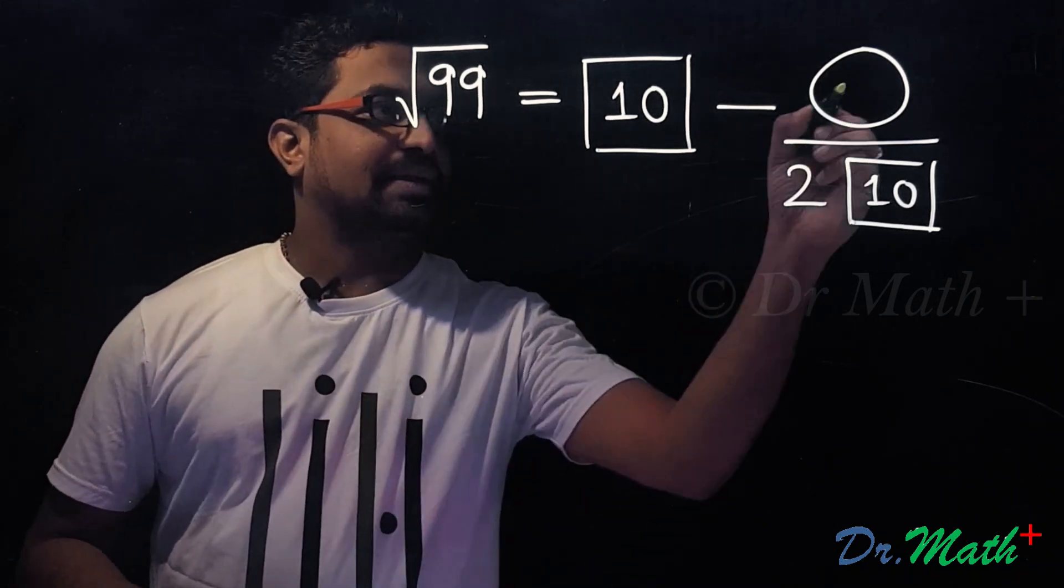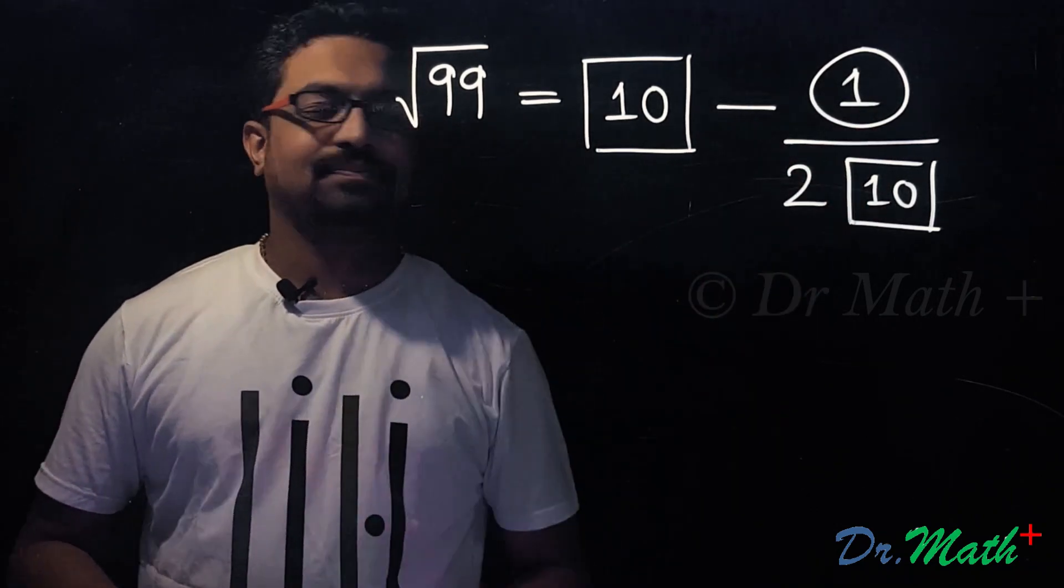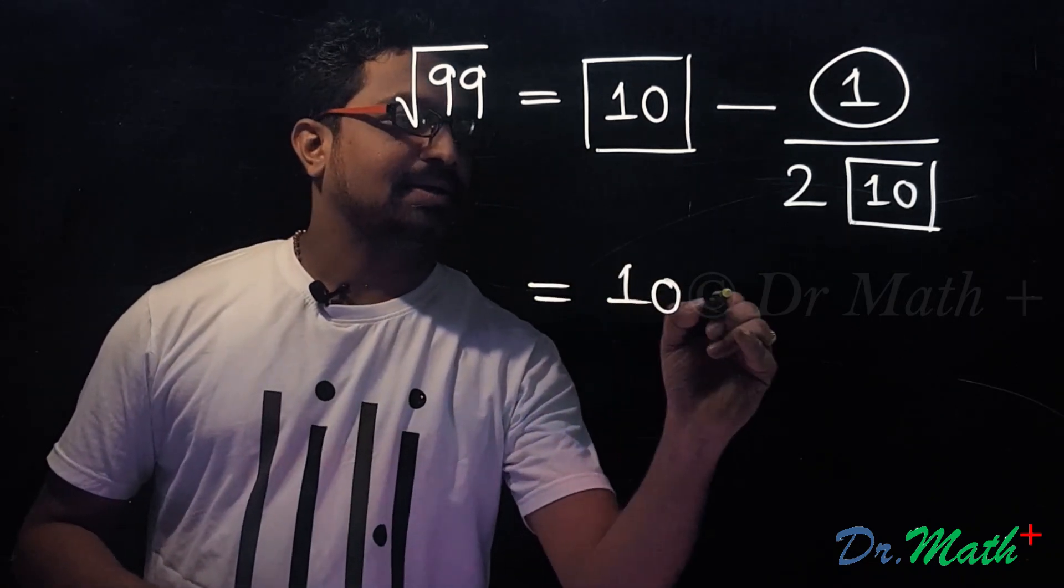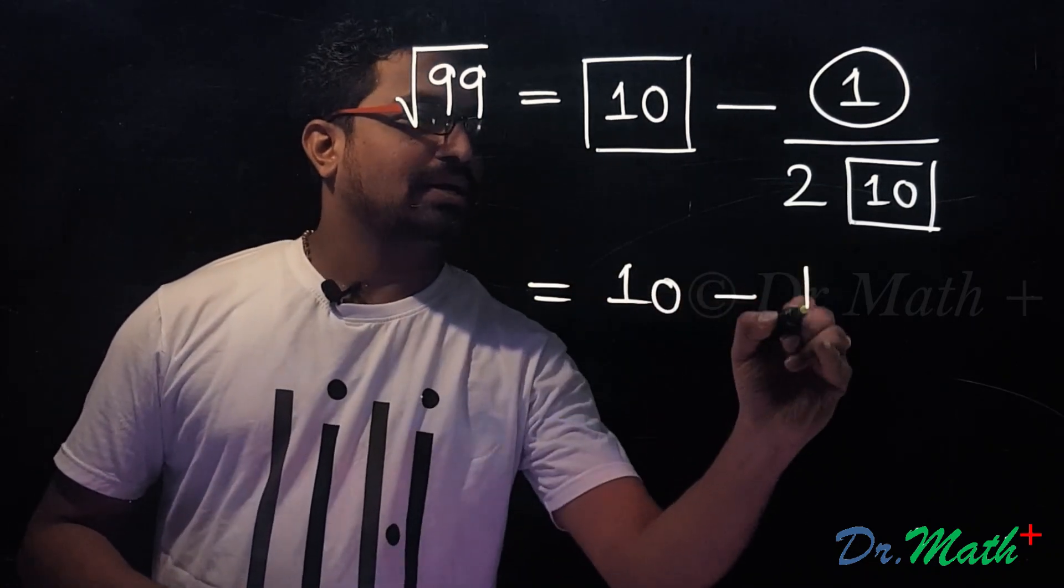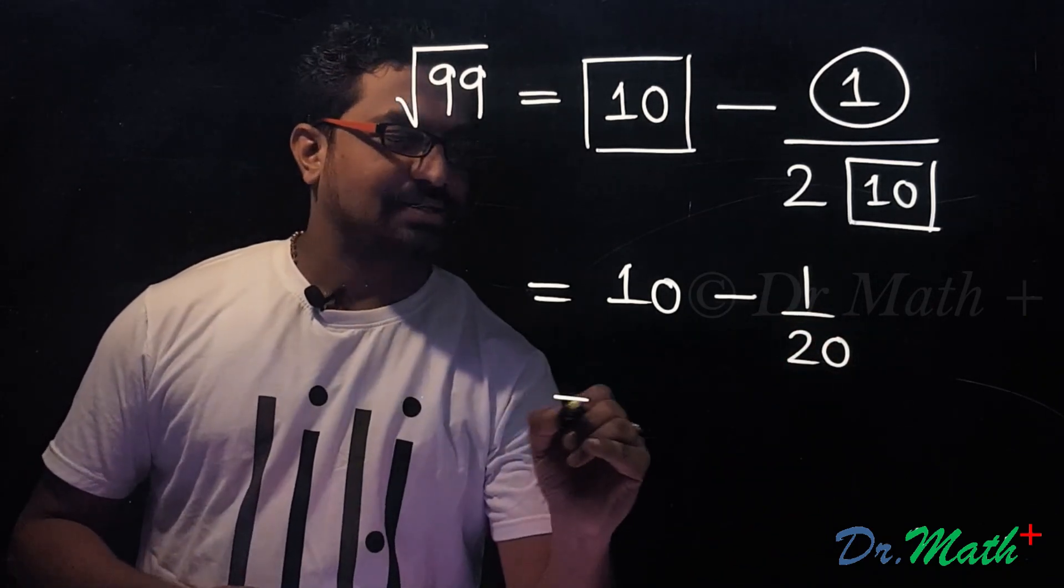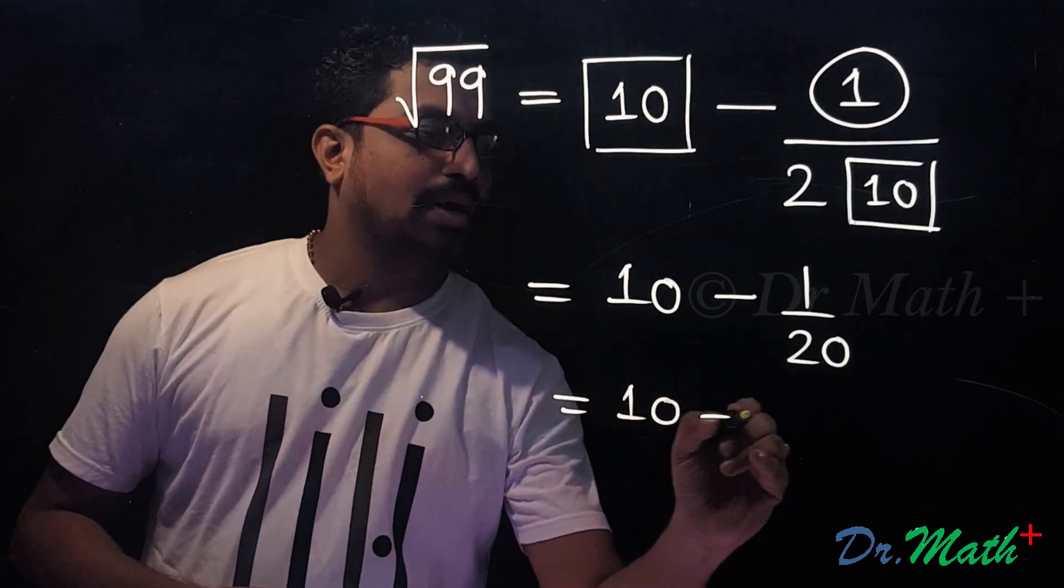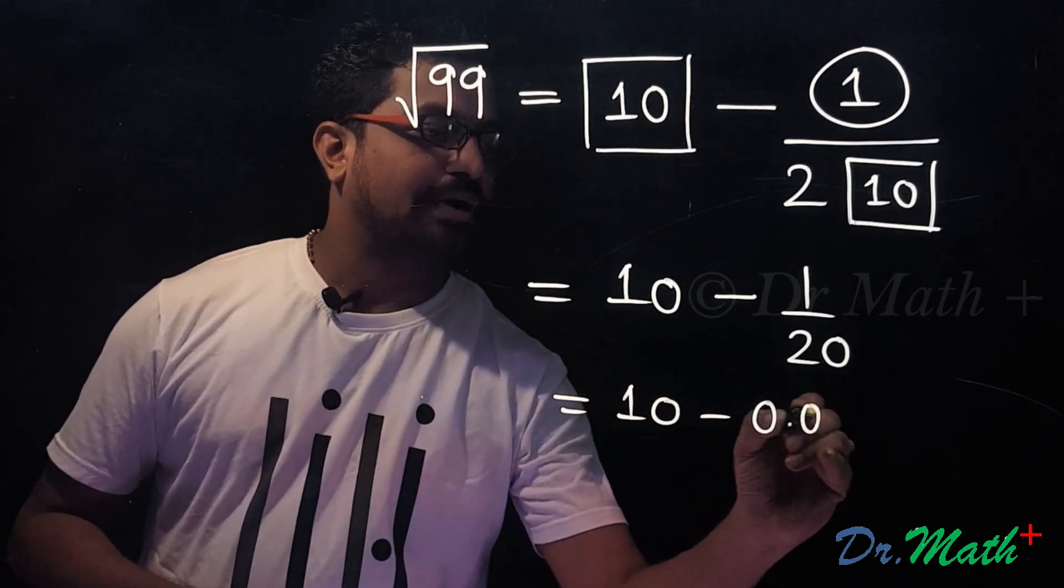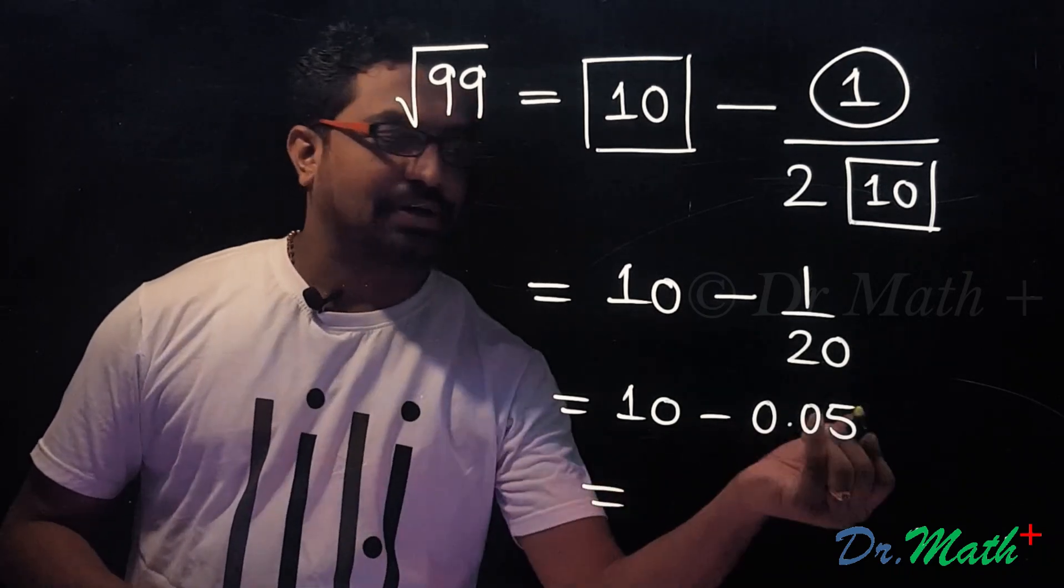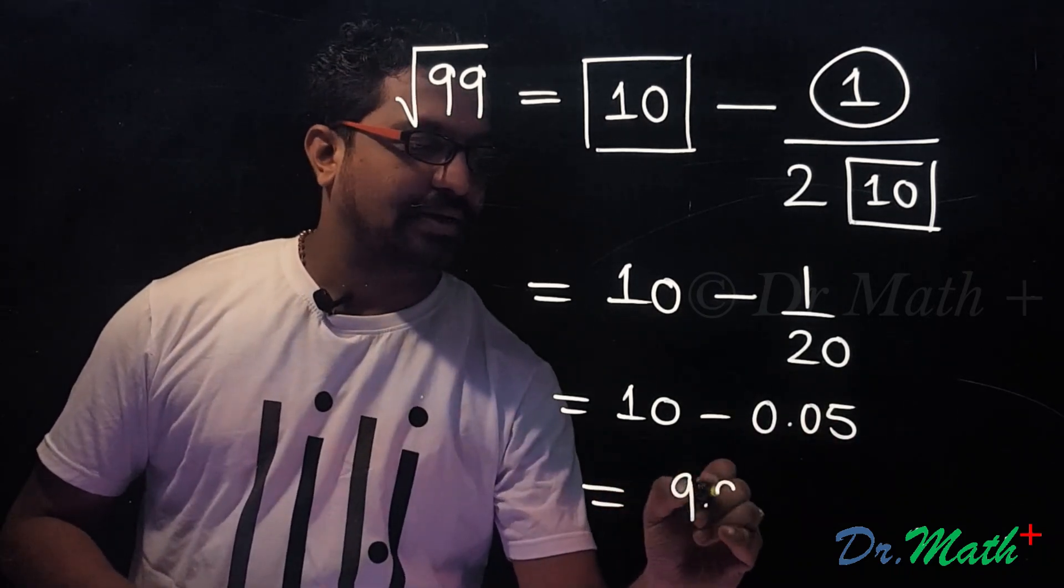So this is 10 minus 1 divided by 20. And what is 1 by 20? 1 by 20 is 0.05. So 10 minus 0.05 would be 9.95. Therefore, square root of 99 is approximately 9.95.